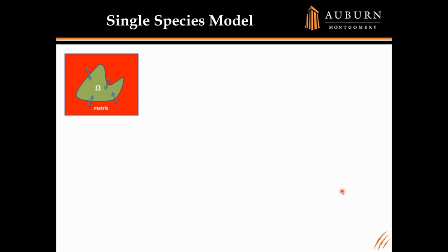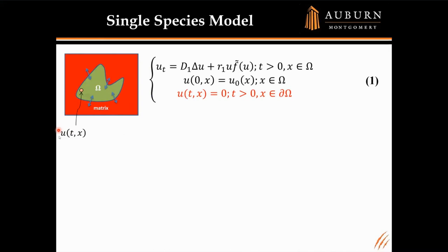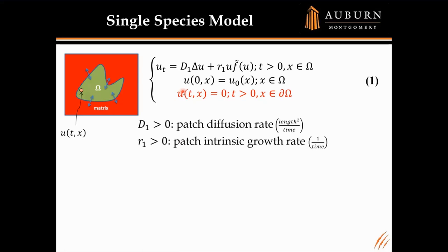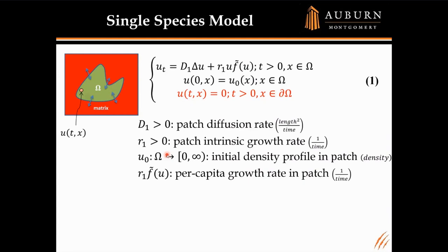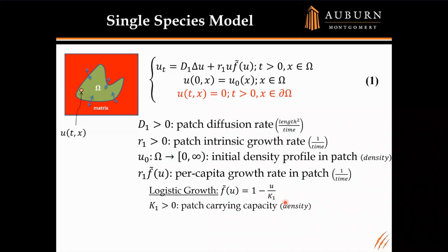For today we'll be talking about two different kinds of models. The first is a single species model — imagine an island surrounded by a hostile matrix, like an island surrounded by ocean. At every time t and location x in the patch, we model density u according to a standard reaction-diffusion model with absorbing boundary conditions, meaning no animals can live on the boundary. D1 is the patch diffusion rate, R1 is the patch intrinsic growth rate, and we'll look exclusively at logistic growth, where K1 is the patch carrying capacity.